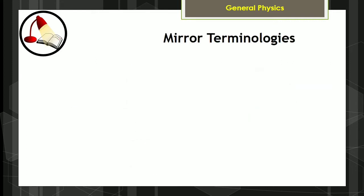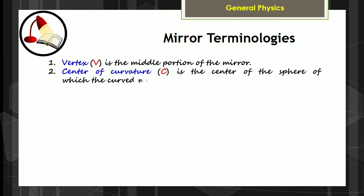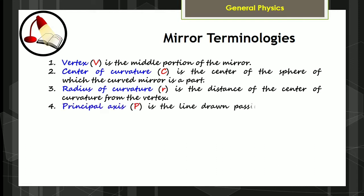For the mirror terminologies, let's consider the following. One: Vertex V is the middle portion of the mirror. Two: Center of curvature C is the center of the sphere of which the curved mirror is a part. Three: Radius of curvature R is the distance of the center of curvature from the vertex. Four: Principal axis P is the line drawn passing through the vertex and the center of curvature.